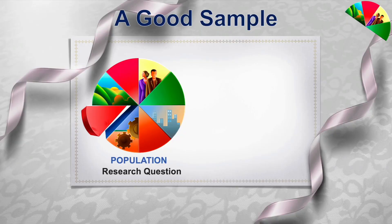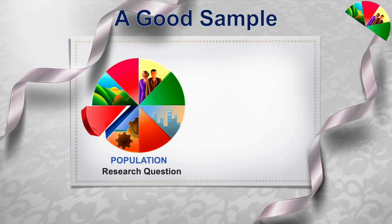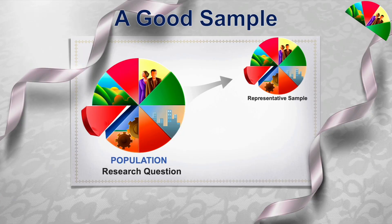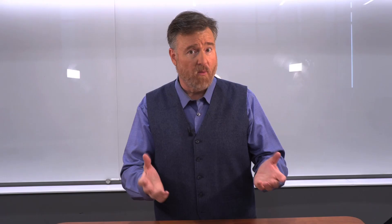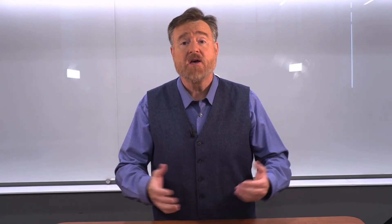When we do research, our research question involves the entire population — we want to know about everyone. However, it would cost a lot of money and take a lot of time to measure everyone in the population. So instead, what we do is take a sample, measure that sample, and then take what we learned from that sample and apply it to the population. If the sample is representative, then the characteristics of the sample would apply in general to the population. The word we use to describe that general application is to generalize — it means that the sample is not going to be precisely like the population, but it's going to be close enough that what we learn from the sample generalizes to that population.